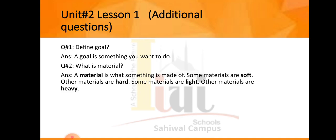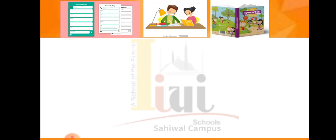The next question is: what is a material? A material is what something is made of. Some materials are soft — like cotton, which feels soft. Some materials are hard — like a table or a brick. Some are light — like a pencil — and some are heavy. These are the different properties of materials.